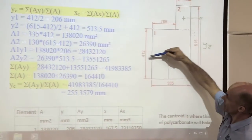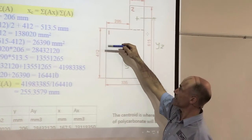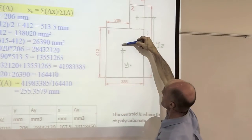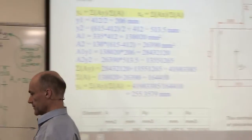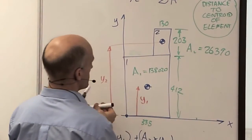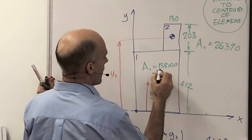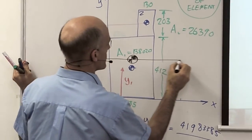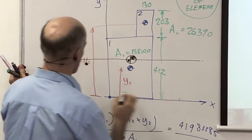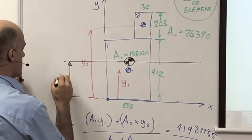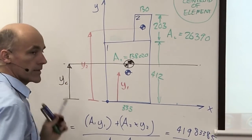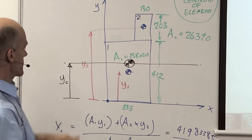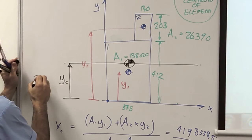The middle of element one was at half of 412, which is 206 millimetres. So 255 is a little bit above the middle of the first rectangle - a little bit above 206. So this becomes the centroid of the whole shape - that's your main centroid. We just found the centroid in the Y direction, called YC, the centroid of the entire combination of two shapes, and it's 255 millimetres.